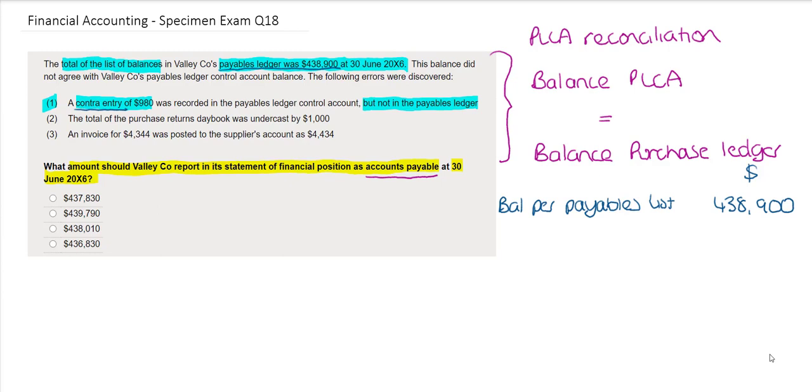A contra entry arises when we have a customer and a supplier that is the same entity and we are therefore adjusting or offsetting the balance from our sales ledger control account and the sales ledger and the purchase ledger control account and the purchase ledger. We will always be reducing the balance with the $980 and so therefore because it hasn't been updated in our payables ledger we need to reduce our balance per the payables list.